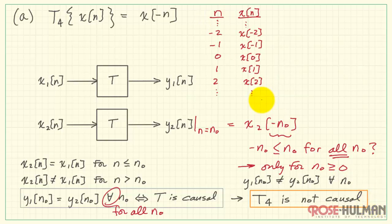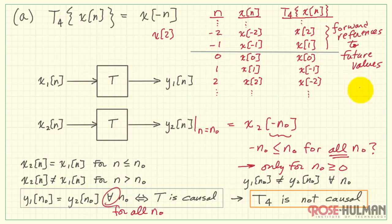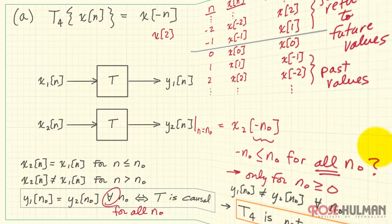Now we can get perhaps a little more insight on this by considering what this change of the time index argument is actually doing. So I put down a generic x of n sequence for some specific time values. Now, at minus 2, switching the sign means that we are requesting x of 2. At n minus 1, we are requesting for our output x of 1, and so forth. So as we consider what this really means, it's saying that for these range of values, the system is making forward references to future values that have not been applied to the system yet. Now, in this case, it's making references to past values, and that's acceptable.